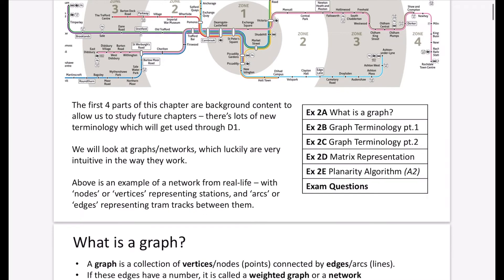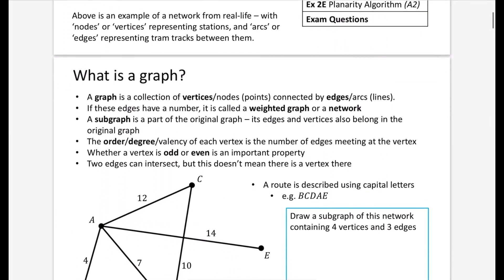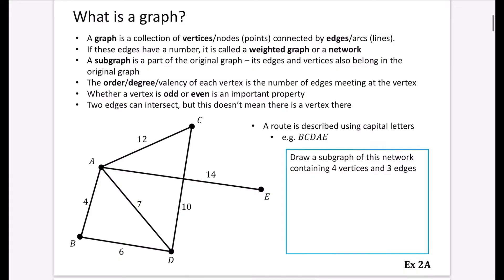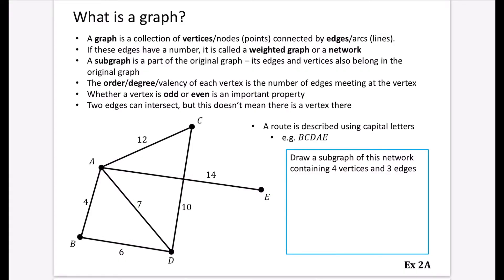So very simply, just to begin with, this is not going to take long, is to describe what actually is a graph. Now, we're not talking about graphs like ones with x and y axis. We're talking about a different kind of graph here. And this graph that we're talking about is a collection of vertices or nodes, which are essentially just points that we've got, and they're connected by edges or arcs, which are lines.